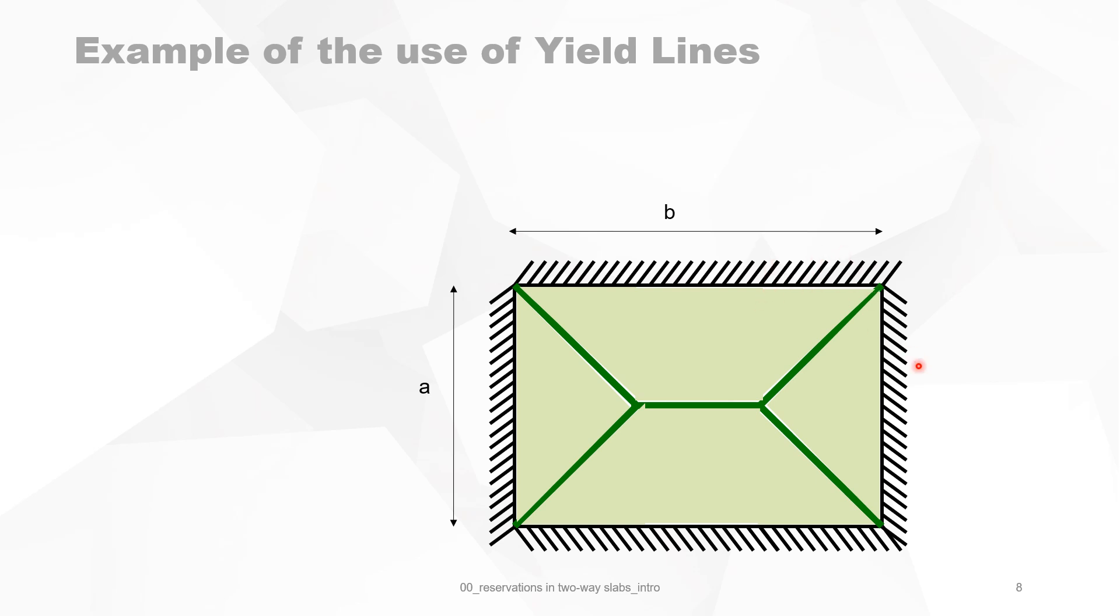We have seen in the playlist of slabs how to estimate the position of the yield lines. When there are the same conditions for the slab, then because of symmetry, the yield line forms an angle of 45 degrees. When, for instance, one side is fixed and the other one is simply supported, then at the side where it is fixed you will have a 60 degree angle and the other side 30 degrees.